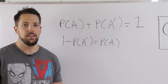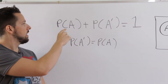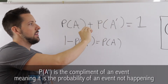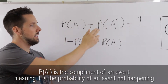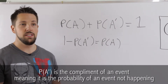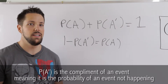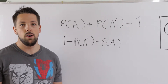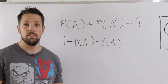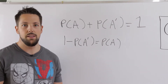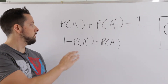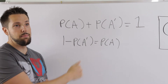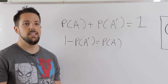If you remember back to the indirect method, probability has something similar. The probability of A happening plus the probability of A prime — meaning the opposite, A not happening — equals one. Basically, the probability of something happening plus the probability of something not happening equals one. So one minus the probability of something not happening equals the probability of something happening. If you have the probability of the opposite, you do one minus it and it gives you what you're looking for.